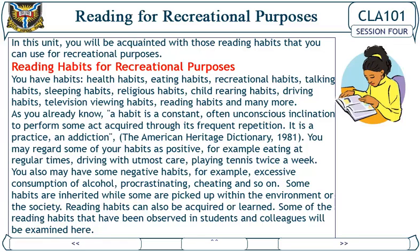You may regard some of your habits as positive — for example, eating at regular times, driving with care, playing tennis twice a week. You also may have some negative habits, for example, excessive consumption of alcohol, procrastinating, cheating, and so on. Some habits are inherited while some are picked up within the environment or society. Reading habits can also be acquired or learned.